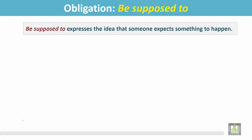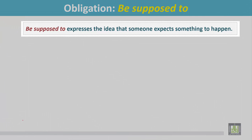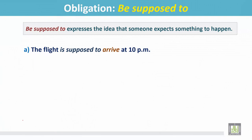Be supposed to expresses the idea that someone expects something to happen. The flight is supposed to arrive at 10 p.m. In this sentence, people are expecting that the flight is arriving at 10 p.m. The movie is supposed to start at 8 p.m.